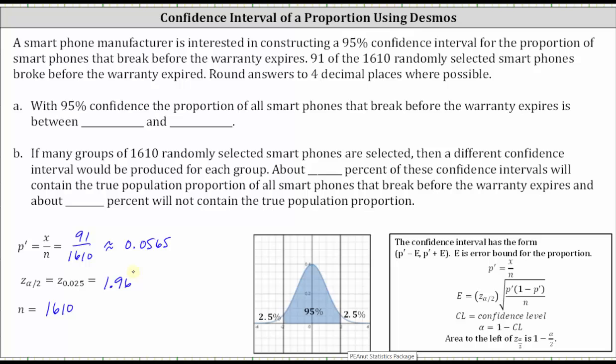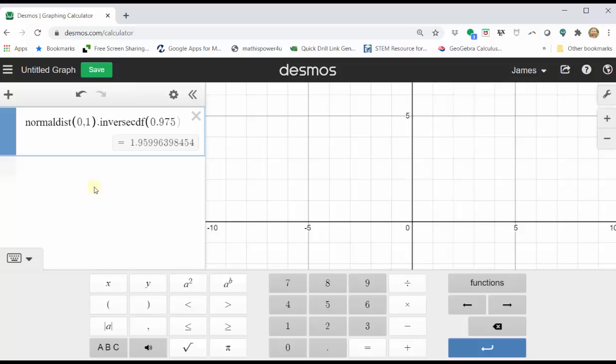Now that we have all the information we need, we will enter the error formula into Desmos, then enter the z-score, the sample proportion, and the sample size. Once we determine E, we can determine the confidence interval by adding and subtracting E from the sample proportion, which is 0.0565. So going back to Desmos, in cell two,